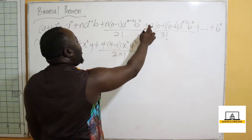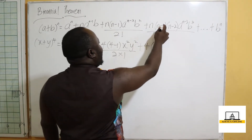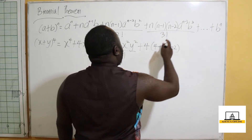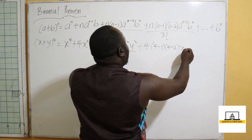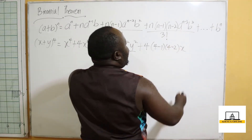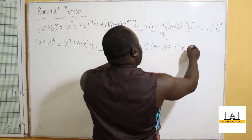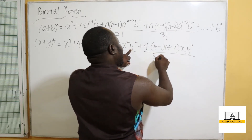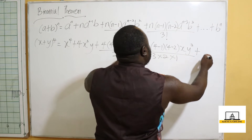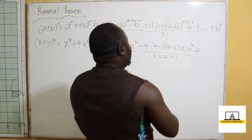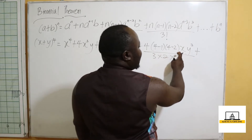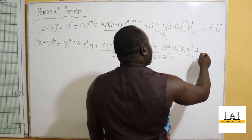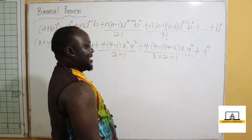Plus, we have 4 times 4 minus 1 times 4 minus 2, times x raised to the power 4 minus 3 which is 1, times y raised to the power 3, all over 3 factorial which is 3 times 2 times 1. Then plus our last term: 4 times 4 minus 1 times 4 minus 2 times 4 minus 3, times x raised to the power 0, times y raised to the power 4, over 4 factorial — that gives us y raised to the power 4, which is our last term.